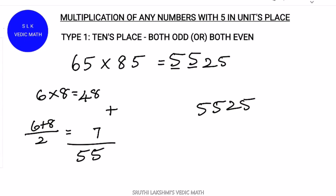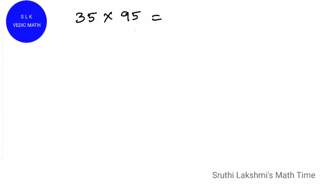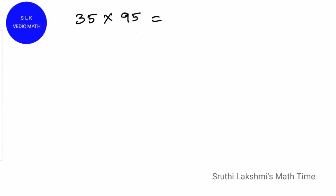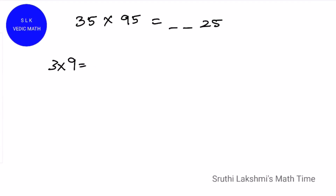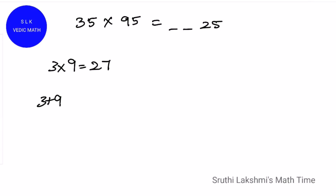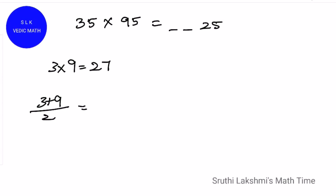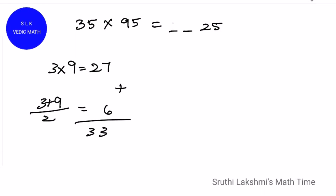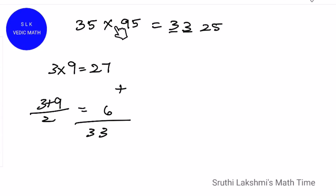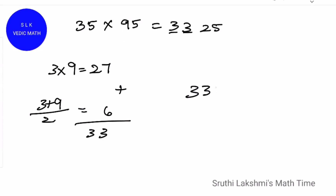Isn't this method so easy? Let's see another example: 35 into 95. Here the 10's place digits are odd — 3 and 9 are odd. First do 5 into 5 which is 25. We have 2 more digits to go. Next multiply the 10's digits: 3 into 9 is 27. Next add the 10's digits and divide by 2: 3 plus 9 is 12 and 12 divided by 2 is 6. So add 27 plus 6 which gives 33. Write 33 here. So 35 into 95 is 3325.